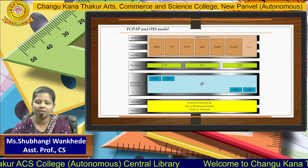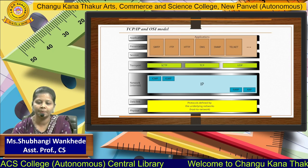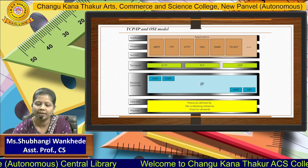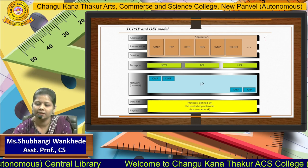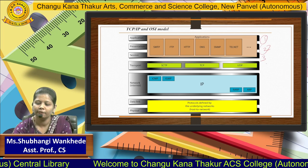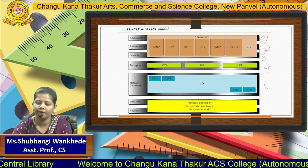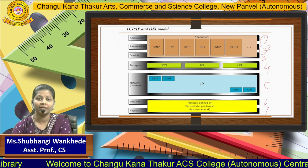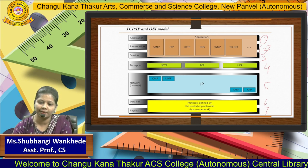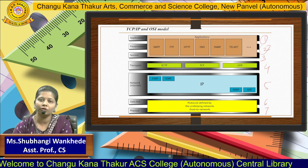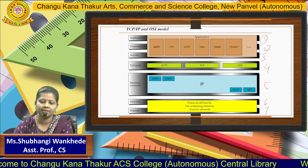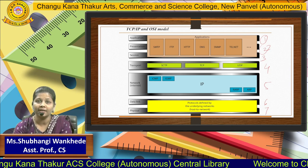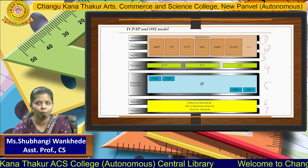This is the diagram for TCP/IP and the OSI model. As you can see, there are seven layers in the OSI model. Out of these seven layers, five layers form what is called the TCP/IP protocol suite.